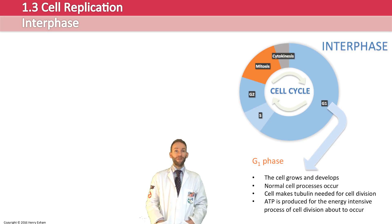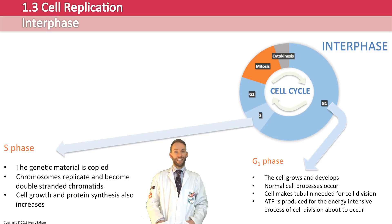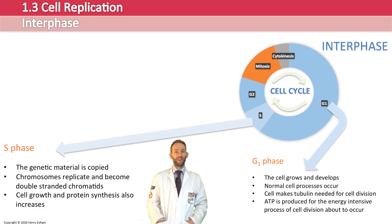Then we move to the S phase, the synthesis phase. This is where the genetic material is copied. Chromosomes replicate to become double-stranded chromatids — this is when DNA replication happens. The cell grows some more and specific proteins required for DNA replication are produced at this point.